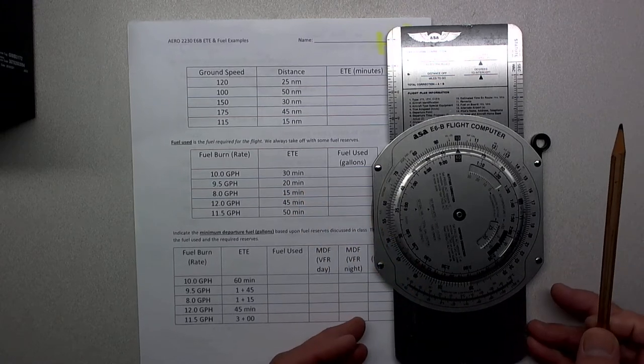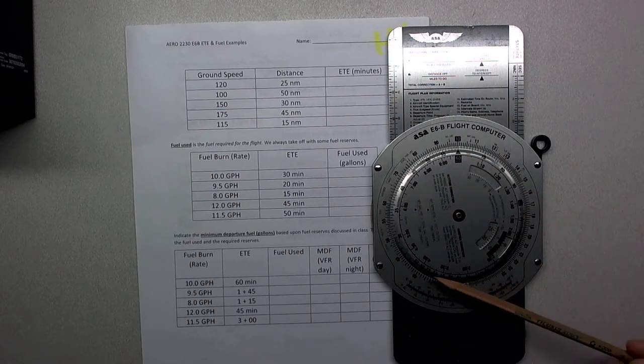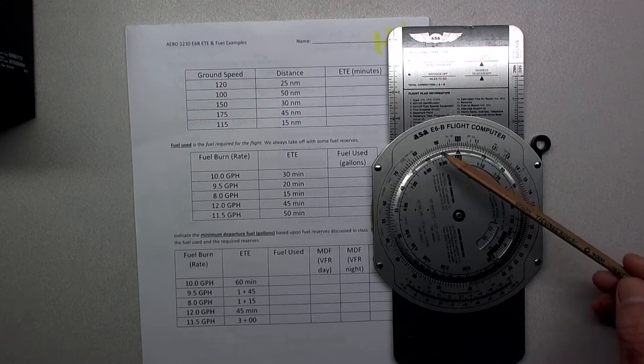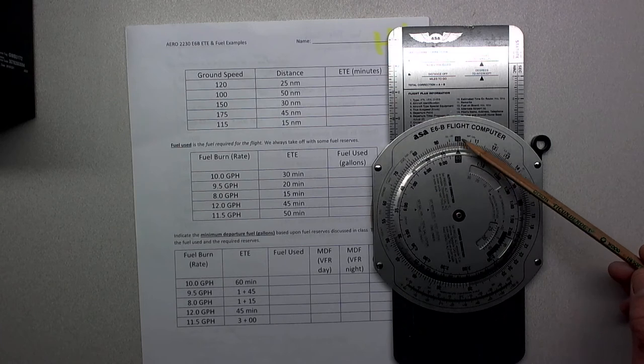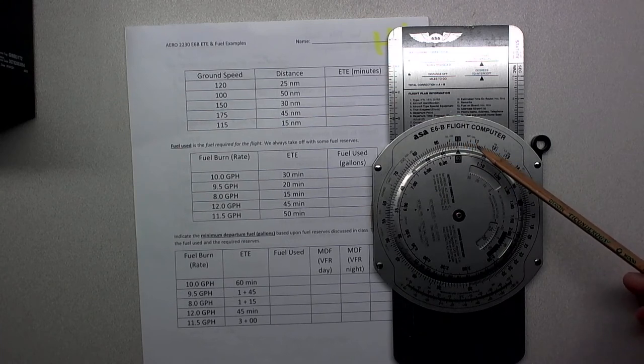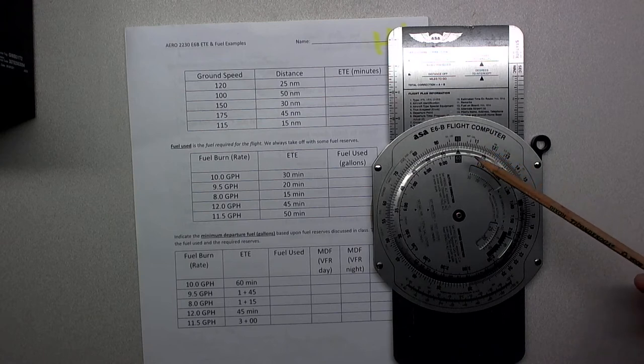The important thing to remember about the E6B is that the inside scale is always time. Everything else is shown on the outside scale. Gallons used is on the outside scale, distance traveled is on the outside scale. If there's anything important to remember about the E6B flight computer, it's that time is on the inside and everything else is on the outside.